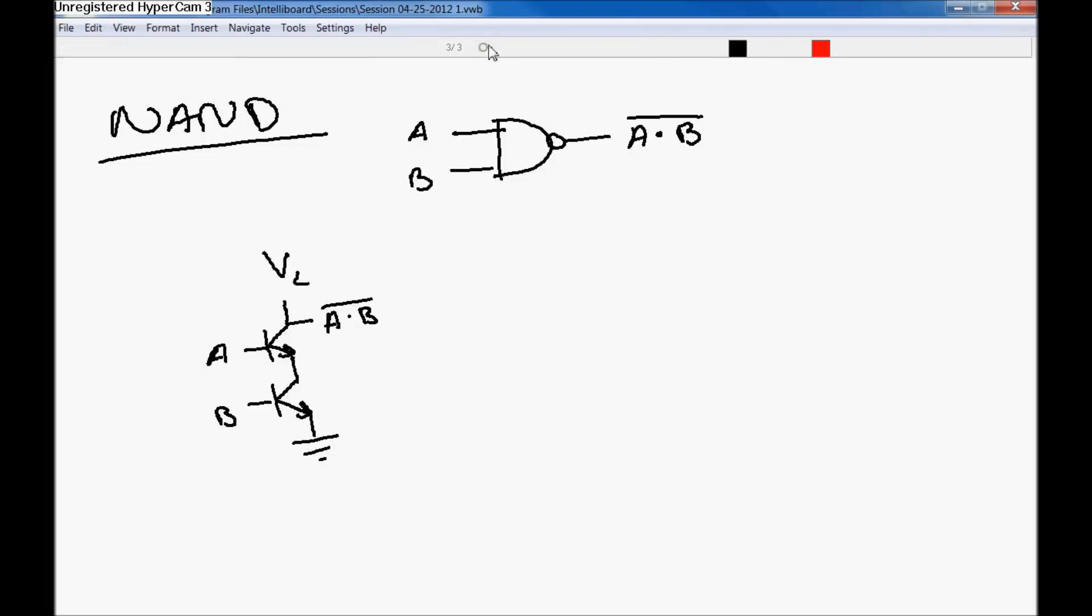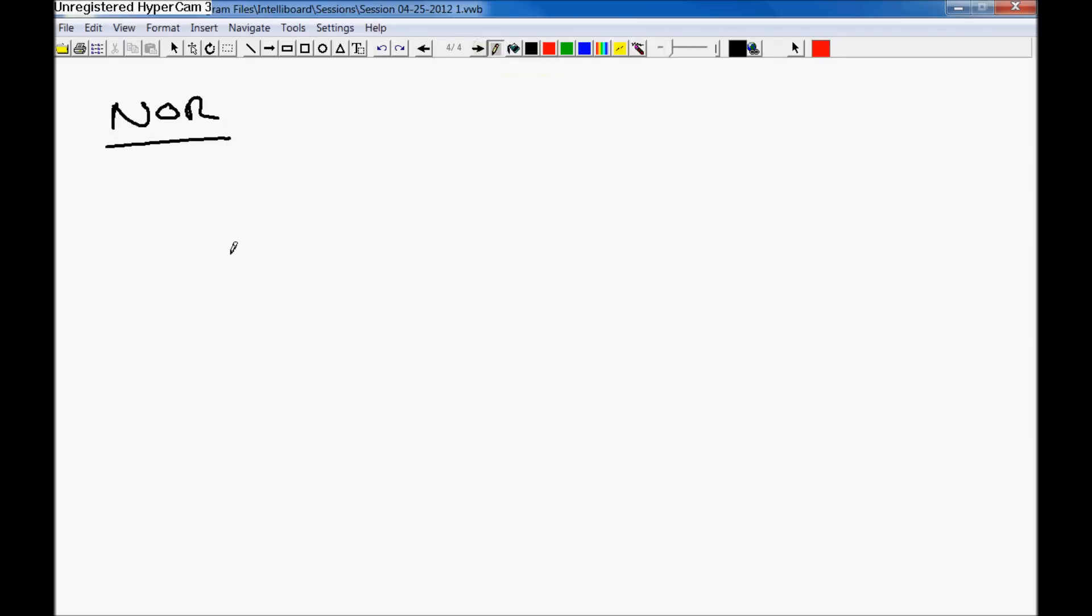A NOR gate looks like this. So again, you've got your logic supply. And again, it's made up of two transistors, but in a slightly different layout. Here's B, and here's A, and then here's the output, A or B NOT. And that's the transistor layout for NOR.